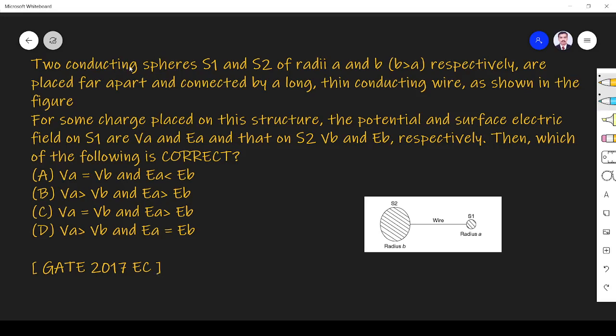The question is: two conducting spheres S1 and S2 of radius A and B where B is greater than A respectively are placed far apart and connected by a long thin conducting wire as shown in the figure.